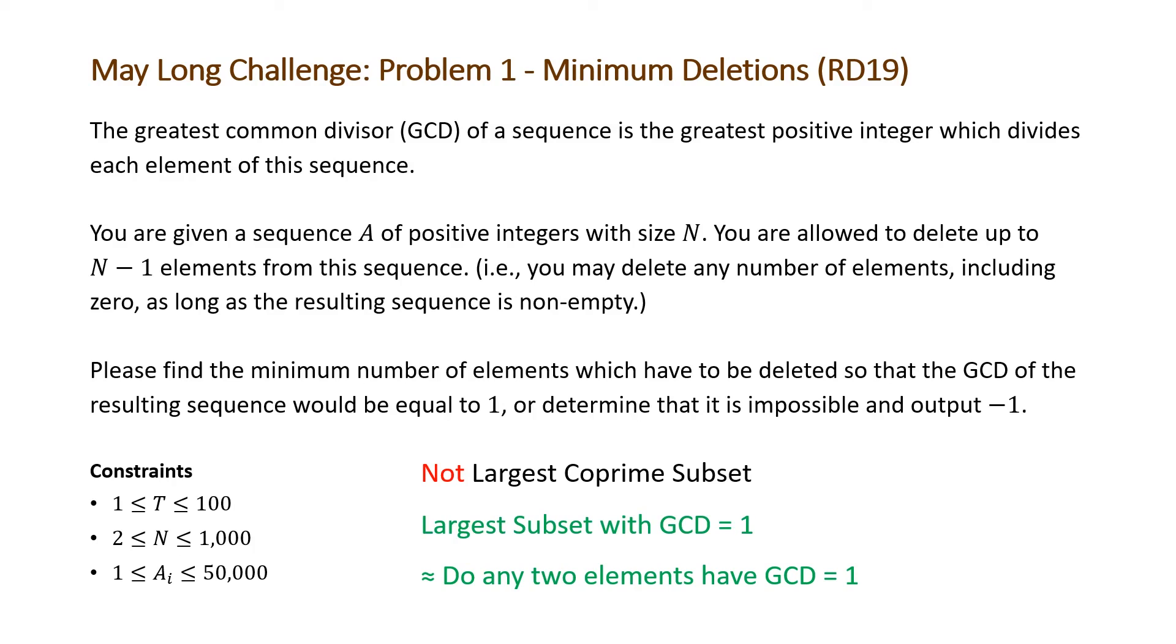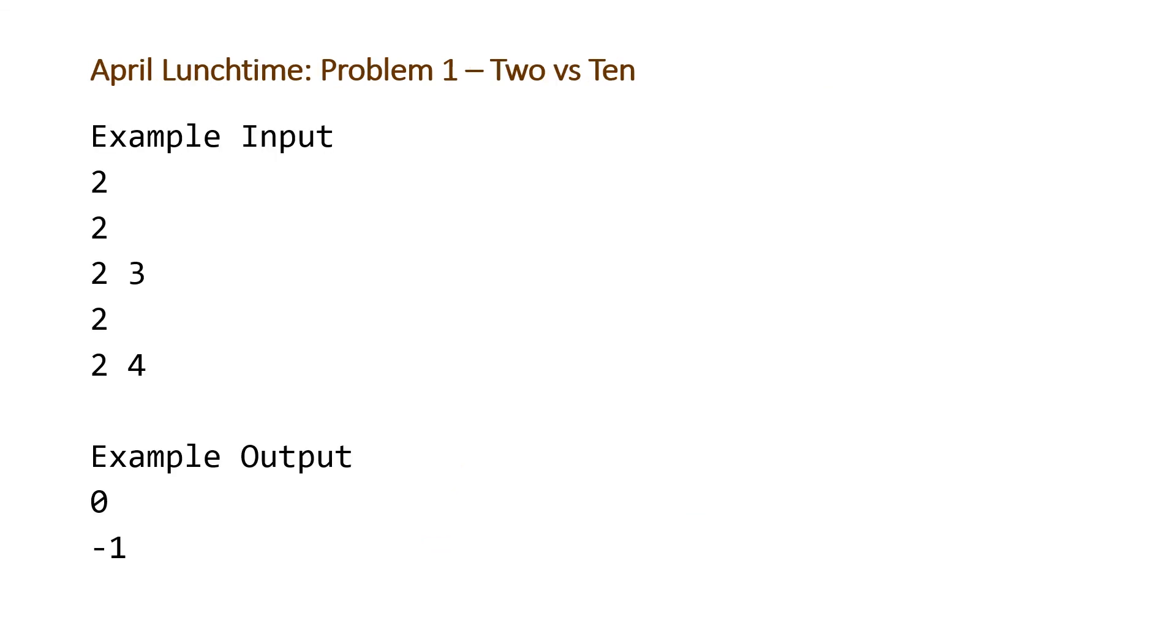And we can reduce this problem to ask, do any two elements of our sequence have a GCD of 1? And we'll see why that's the case in a second, but just note that this problem is not the largest coprime subset problem. It's the largest subset with GCD equal to 1 problem. So let's take a look at the examples that CodeChef provided us with. So here are our examples. Our first number here is T, the number of test cases, and then we're provided with an N, which represents the length of our array. We're given our first array here with two elements, and then we're given another array of length 2 with the elements 2 and 4.